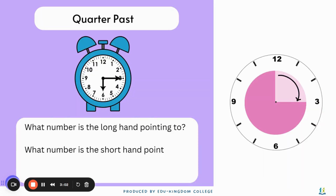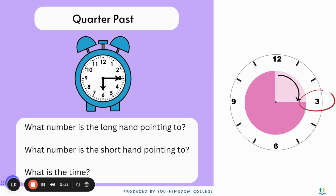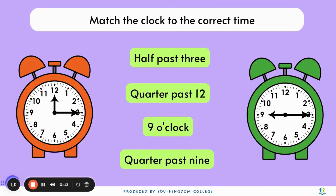For quarter past, the long hand must be pointing to the number 3. The shorter hand will be pointing to the hour, and the time will be quarter past the hour. For example, the clock on the left: the minute hand is pointing to 3 and the hour hand is pointing to 12, so the time will be quarter past 12. For the clock on the right: the minute hand is pointing at 3 and the hour hand is pointing at 9, so it will be quarter past 9.